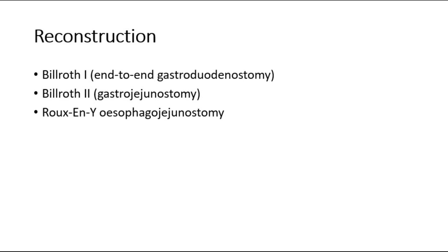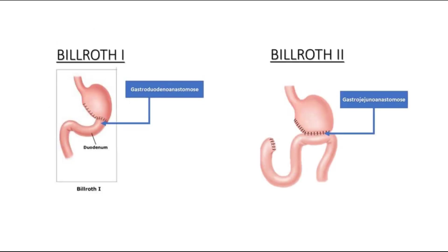After the resection, reconstruction must also be done. This can be performed through Billroth I, Billroth II, or Roux-en-Y oesophagojejunostomy. Billroth I is a gastroduodenostomy, where there is an anastomosis between the proximal remnant of the stomach and the duodenum.